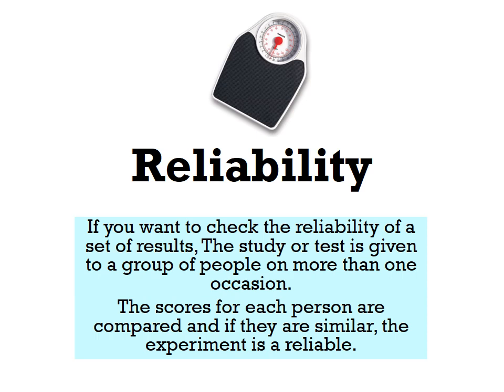To put this in context: if you have scales at home and step on them every 10 minutes within an hour and get the same weight each time, that suggests your scales are reliable. But if you get completely different results each time — unless you were eating tons of doughnuts — that suggests the scales are not reliable. The same logic applies to experiments: consistent results indicate a reliable experiment.